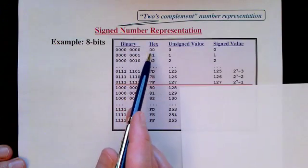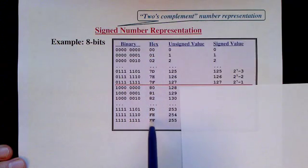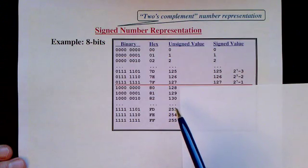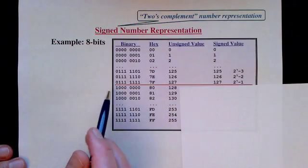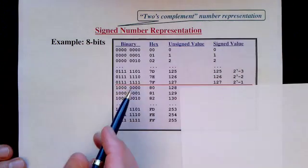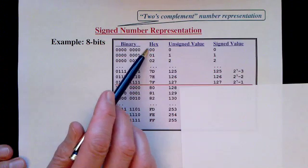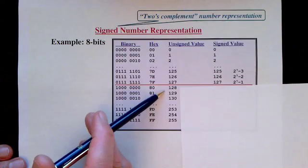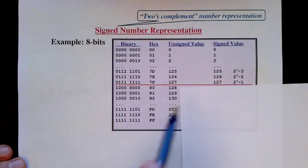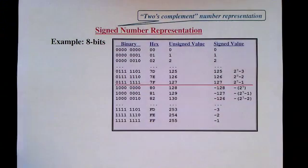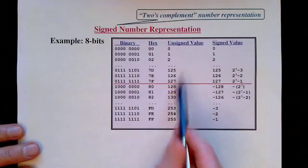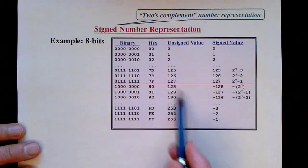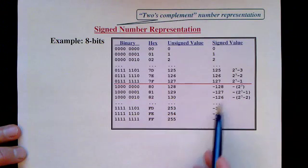We can express all possible bit combinations in binary or hex, starting with zero and going up to FF. With unsigned numbers we can represent zero through 255, but we'd like to represent negative numbers as well. So we reserve half the values for negative numbers. We can only go up to a maximum positive value of 127 now, because the upper bit patterns will be used to represent negative numbers instead.